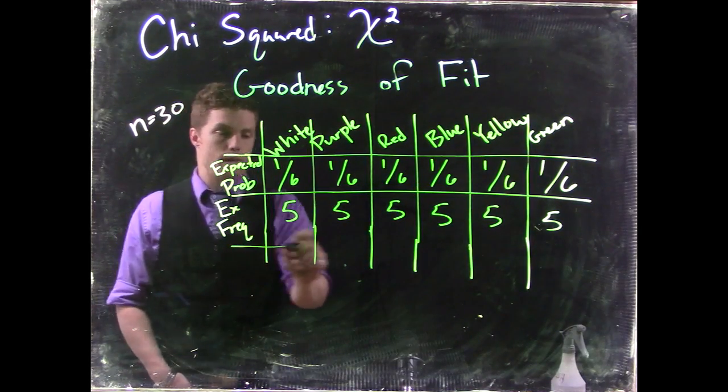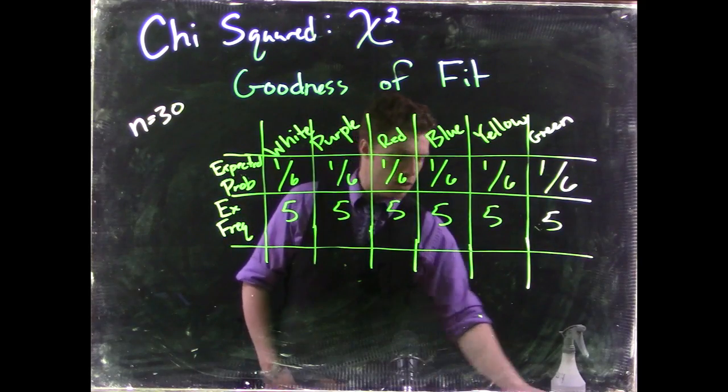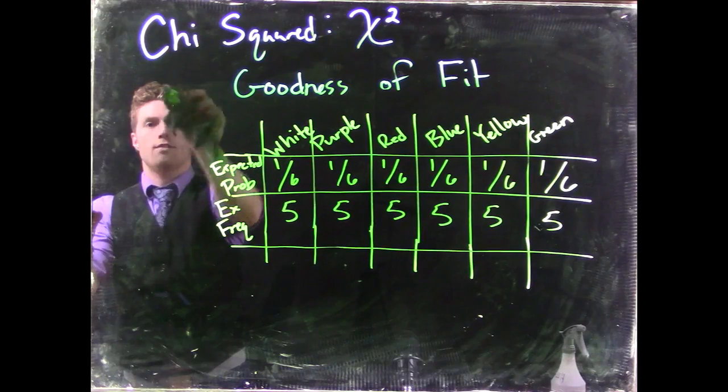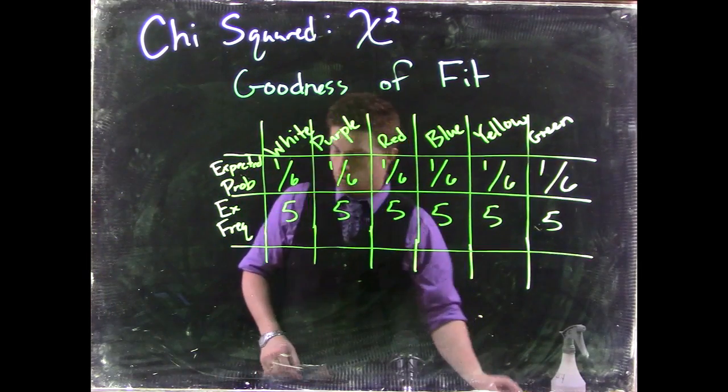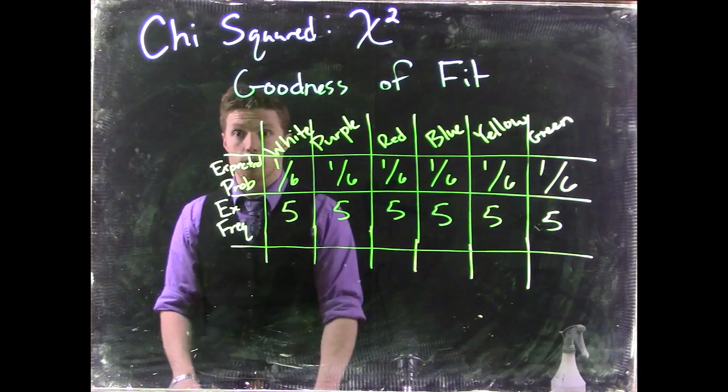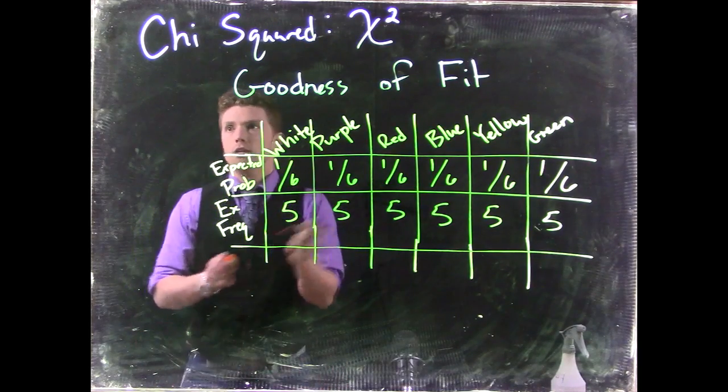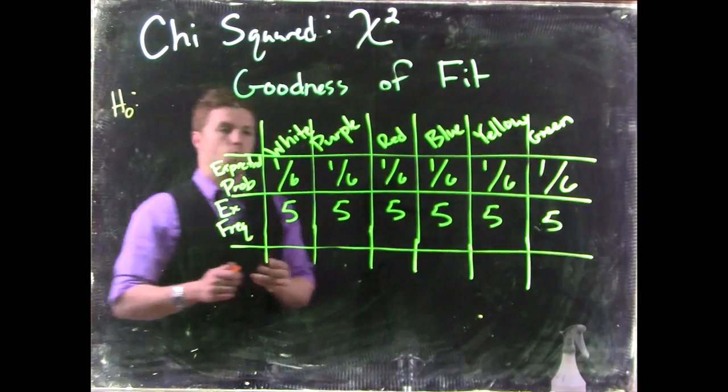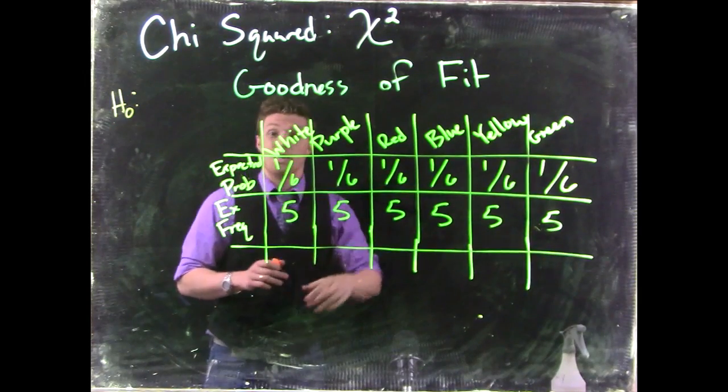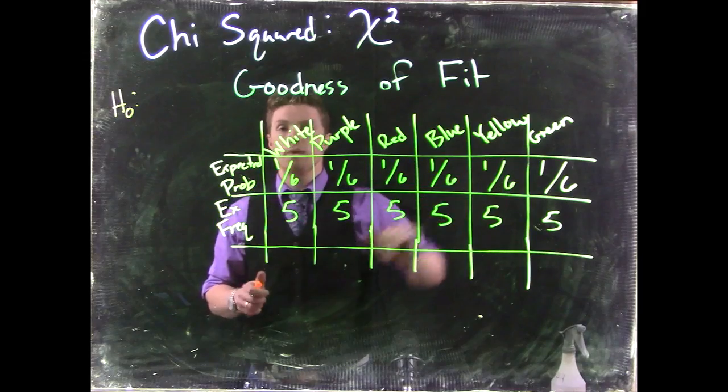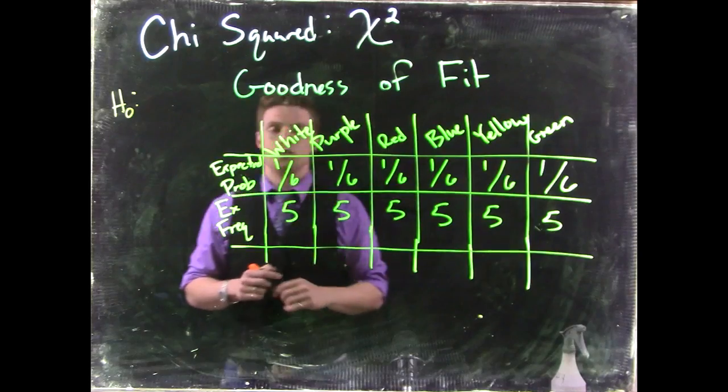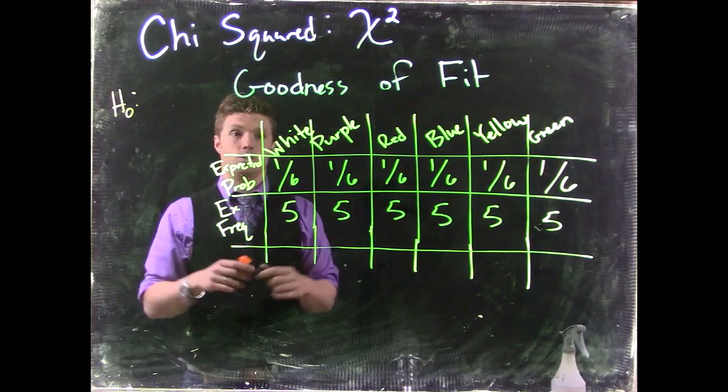So what we can do is set up a null and alternative hypothesis, because we can still do a hypothesis test like we've been doing for months now. We could set up our null hypothesis where we expect these probabilities to follow some given distribution. In this case, it's a uniform distribution, but it could be a different distribution too.